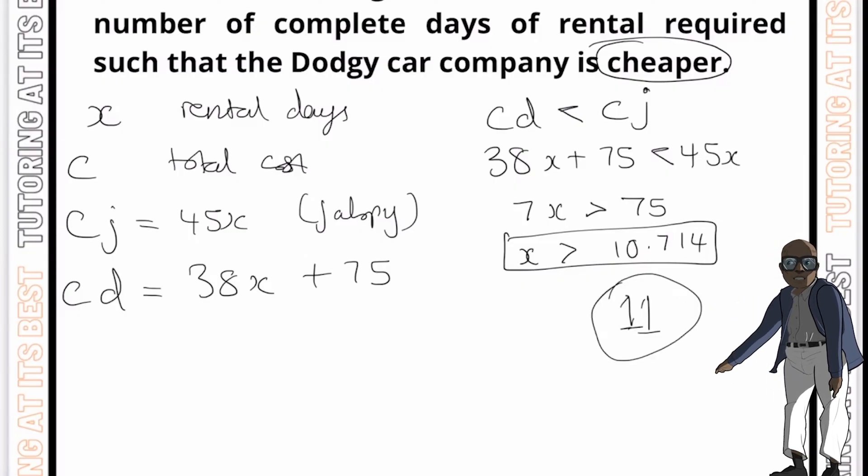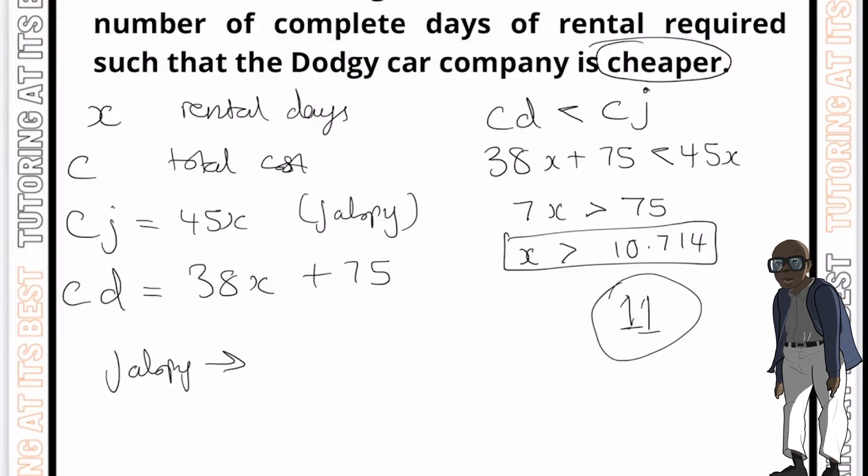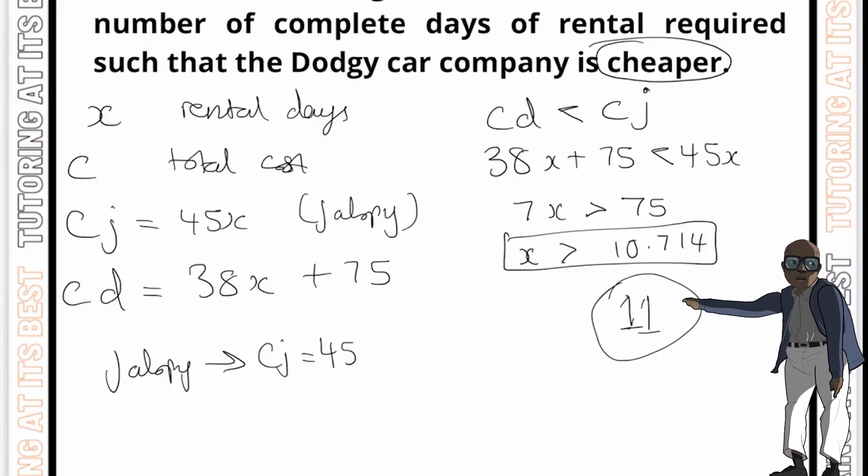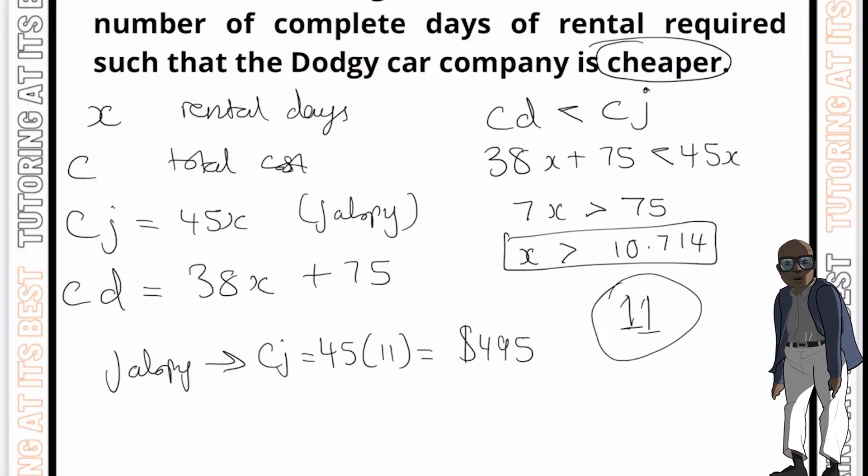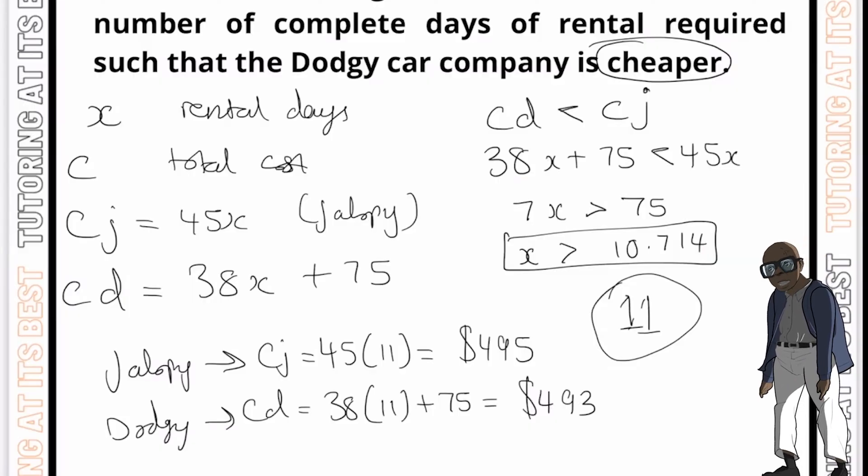And let's check the answer by comparing the cost of the rental for each company when renting for 11 days. So let's go ahead and take our first car company, which is Jalopy. And I'll simply write out my CJ, which equals 45 multiplied by 11, and that gives me $495. And then if we go for the dodgy company, that's going to be CD and we'll have 38 multiplied by 11 plus the initial charge of $75, and that's $493. And now since the cost of the rental for dodgy is less than the cost of the rental for the Jalopy when renting for 11 days, our answer of 11 days is correct.